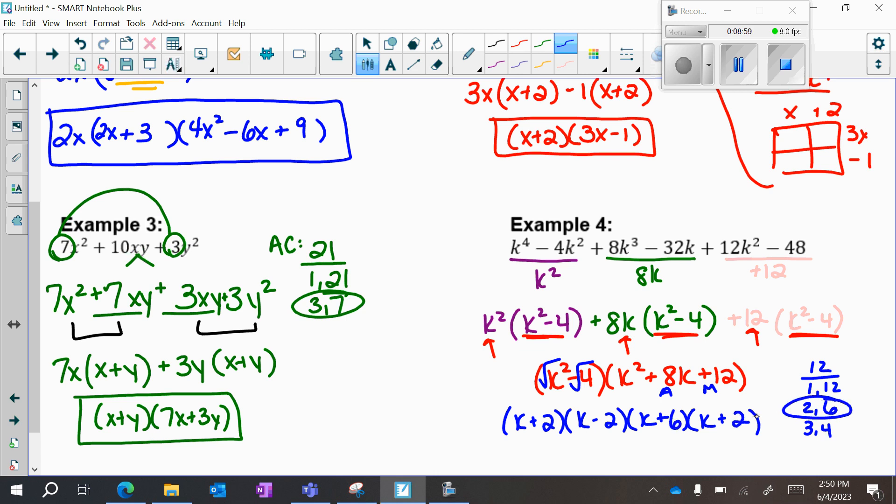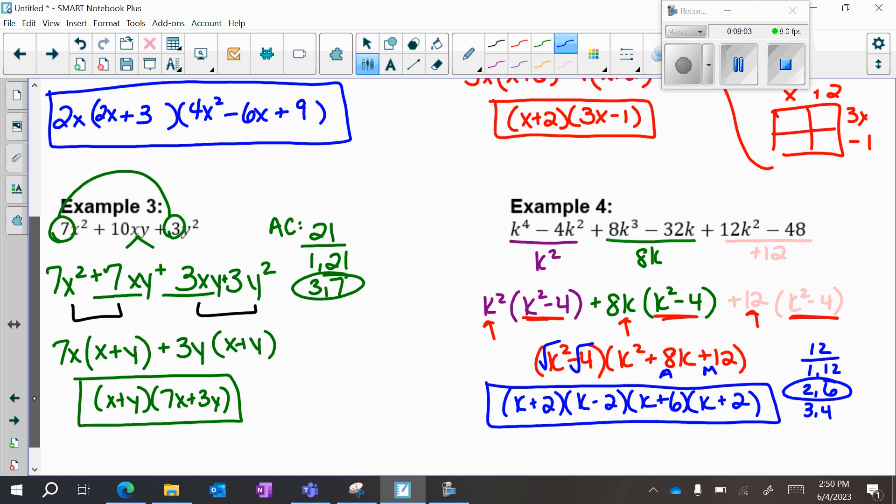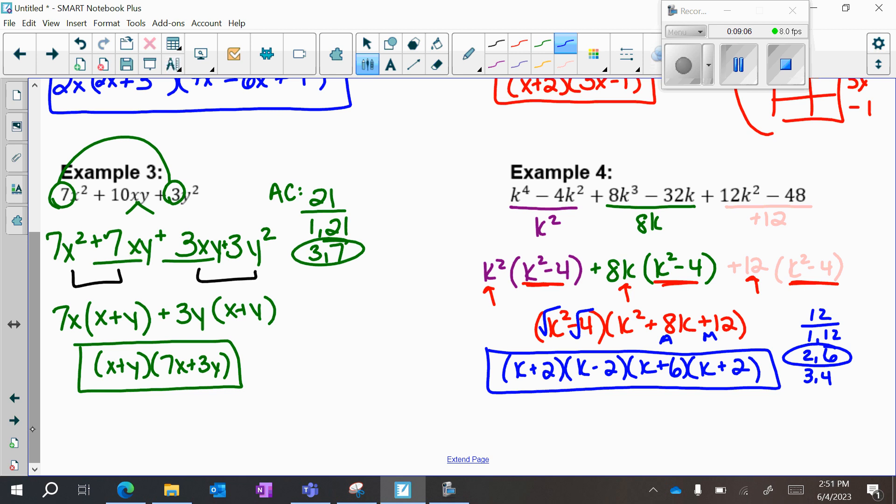So you can leave it just like this, or what you may notice is that k plus 2, that factor is repeated. So you could list this out as k plus 2 squared times k minus 2 times k plus 6. And that'll be important for us when we get into polynomials and graphing, because that will reveal multiplicities and other things like that. So this is a review of all types of factoring thus far.